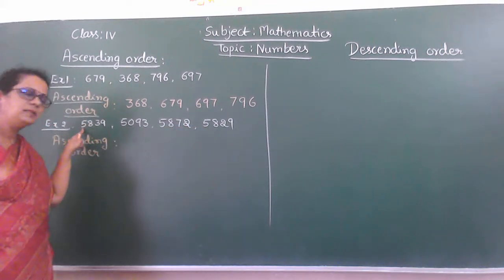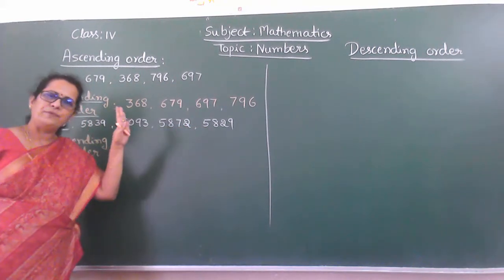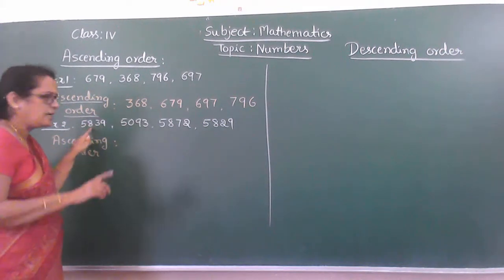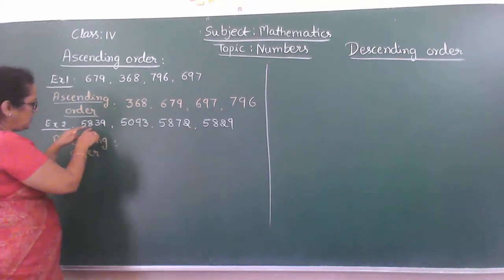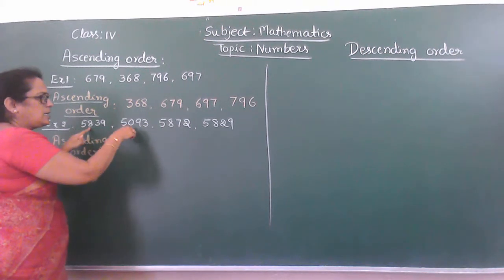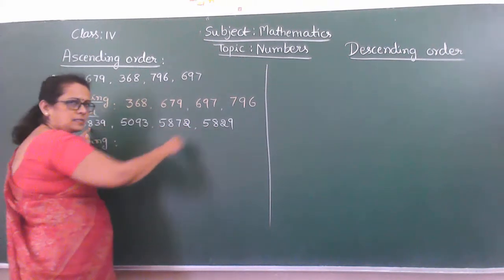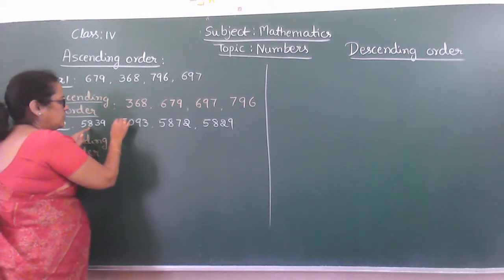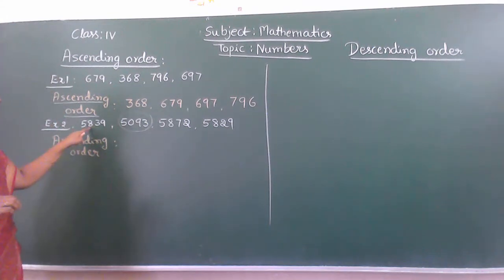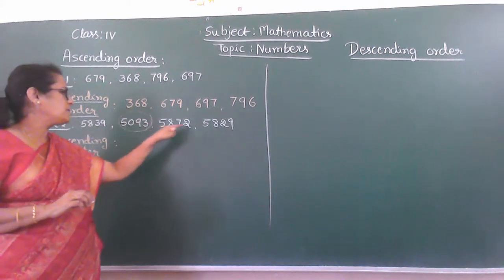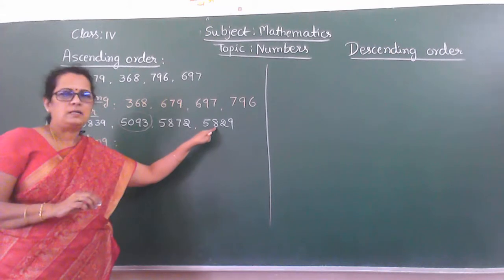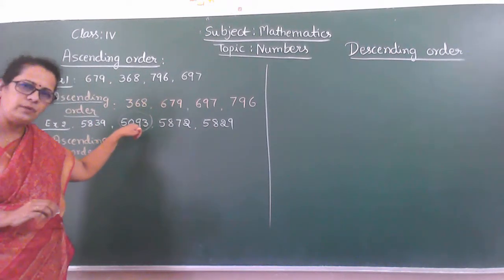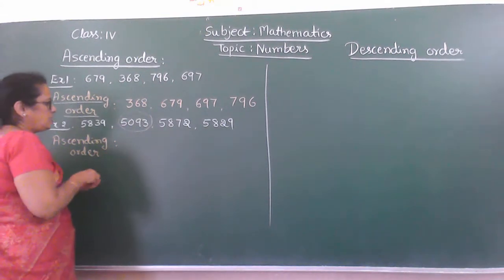The thousands place is the same for all — it equals 5. So it is difficult to identify. That is why, next, you go through the hundreds place. See here: it is 8, 0, 8, 8. So just take this one as smallest because 0 is there — the hundreds place values of three numbers are 8, 8, 8. Only the left over is 5,093.